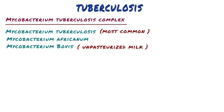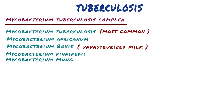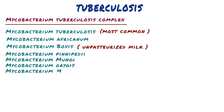In addition, other organisms that have been reported rarely as causing tuberculosis include Mycobacterium pinnipedii, Mycobacterium mungi, Mycobacterium origus, Mycobacterium microti, and finally Mycobacterium caneti.